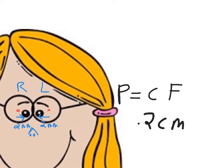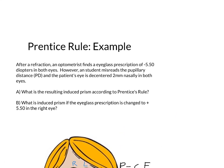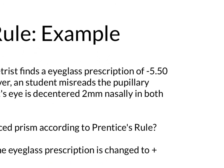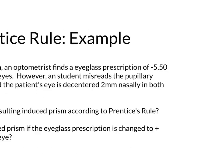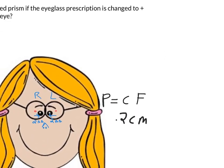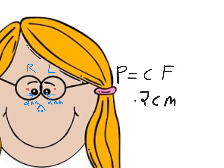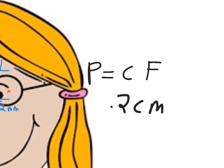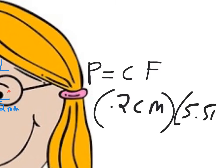As stated in the example, the patient's eyeglass prescription is minus 5.50. For now, you can ignore the minus sign — you can see later in the video why. So this would be 0.2 centimeters times 5.50, which comes out to be 1.1 prism diopters.